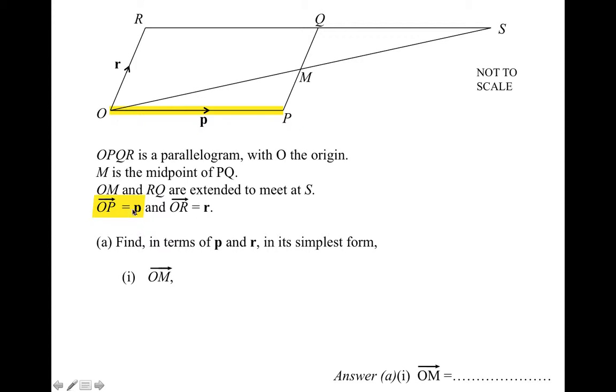Vector OP is P, so vector OP is the movement from point O to point P, and any movement with that distance and direction is referred to as R. Finally it says not to scale. Exam questions often do drawings that are distorted in order to prevent you from just measuring the diagram.